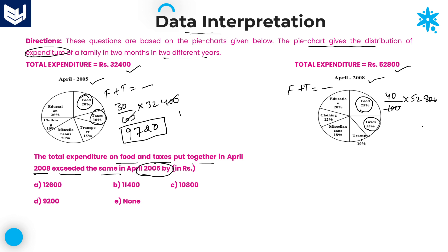Carrying out the multiplication: keeping the zero at the end, 8 times 4 is 32, carry 3; 2 times 4 is 8 plus 3 gives 11, carry 1; 5 times 4 is 20 plus 1 gives 21. So the result is 21,120. This is the total food and taxes together in 2008.